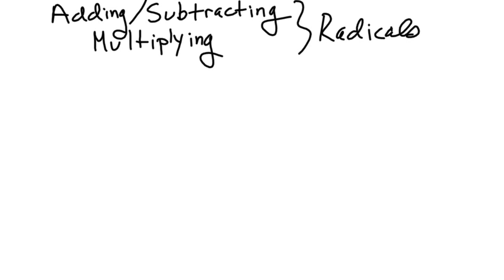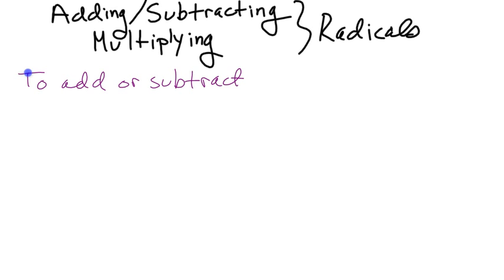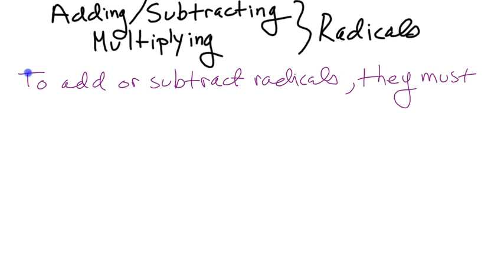Adding and subtracting and multiplying radicals. Let's start with adding and subtracting first. To add or subtract radicals, they must be like radicals.